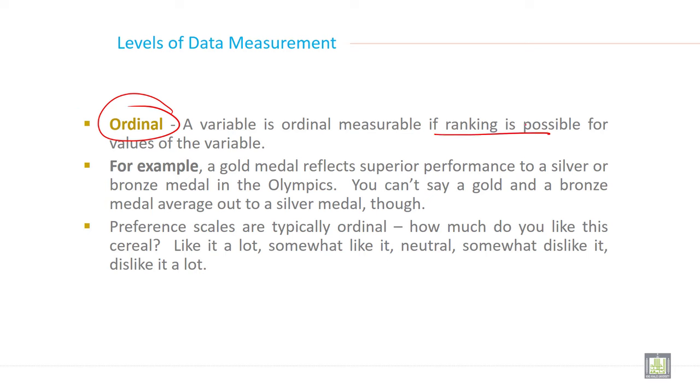For example, a gold medal reflects superior performance to a silver or bronze medal in the Olympics. You can't say a gold and a bronze medal average out to a silver medal, though.